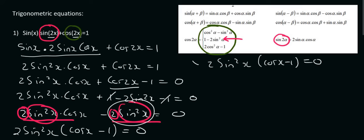Carrying on, remember when you end up with a situation like this, just let this part equal 0, or let that part equal 0. So we can say 2sin²(x) = 0, or cos(x) - 1 = 0.